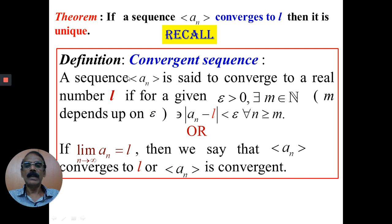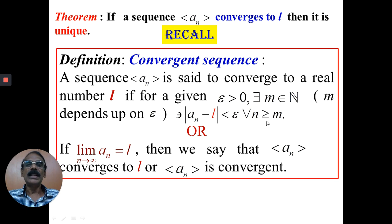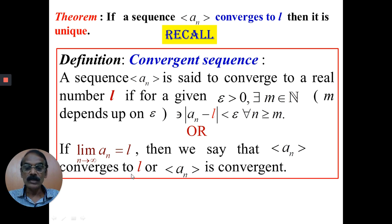We know that a sequence an converges to l if, for a given epsilon which is positive, there exists a natural number m such that the modulus of an minus l is less than epsilon for all n greater than or equal to m. Or we can define it in terms of limits: if the limit of the sequence whose nth term is an, as n tends to infinity, is l, then we say that the sequence an converges to l, or we say an is convergent.